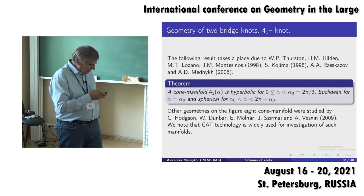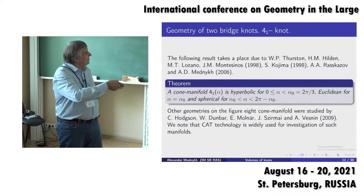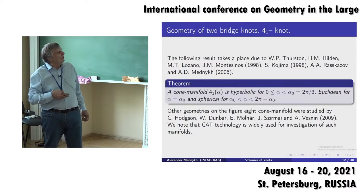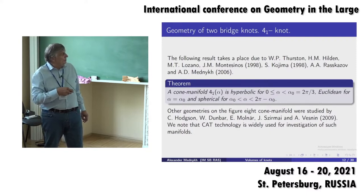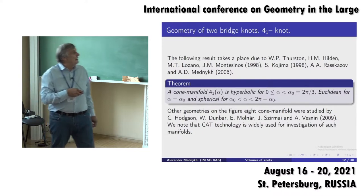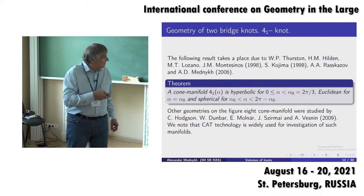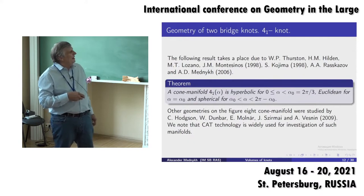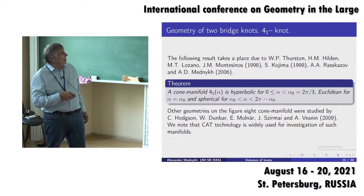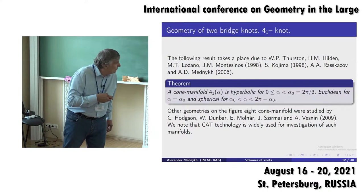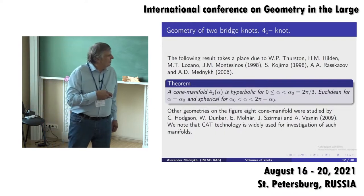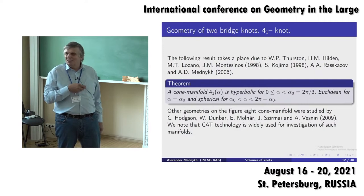Regarding existence of geometrical structures: if the cone angle is sufficiently small, between 0 and 2π/3, we have a hyperbolic structure; at the single point α₀ = π/3, we have a Euclidean structure; and for larger angles, at least within certain limits, we have a spherical structure. This is valid for spaces of constant geometry. More exotic geometries were investigated in papers by Hodgson, Dunbar, Molnar, and in a joint paper of Molnar, Shimizu, and Vesnin. I should note that Cartan–Alexandrov–Topanogov technology is widely used in the investigation of such objects.